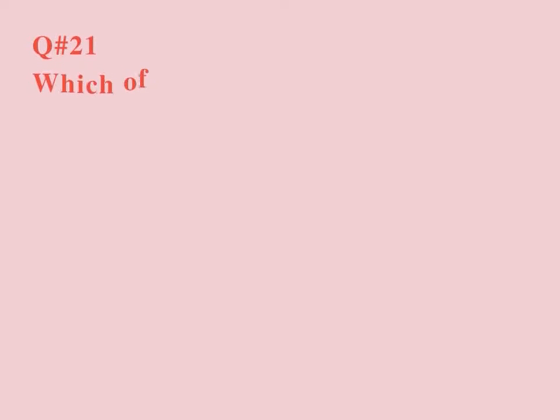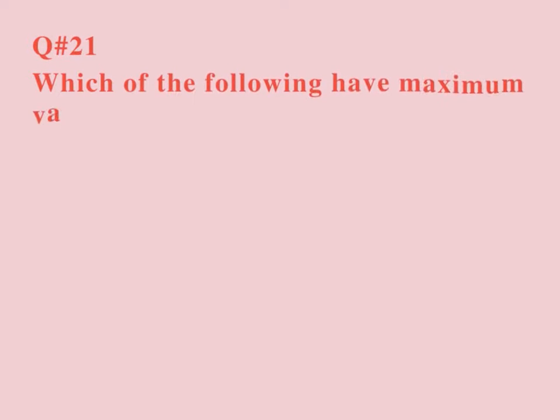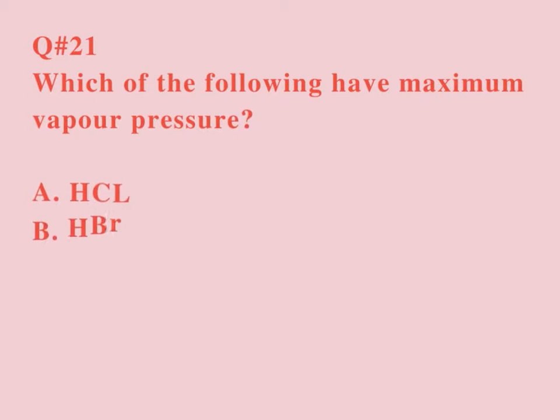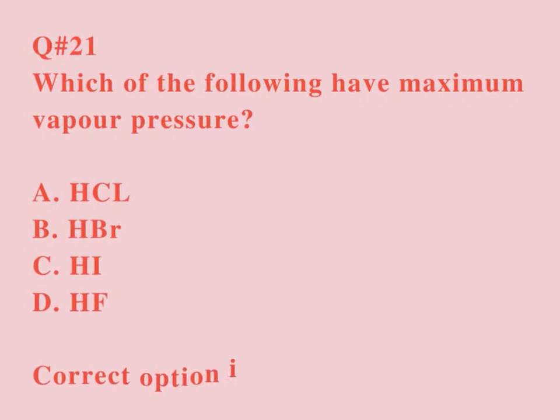Question number 21. Which of the following has maximum vapor pressure? A. HCl. B. HBr. C. HI. D. HF. Correct option is C.